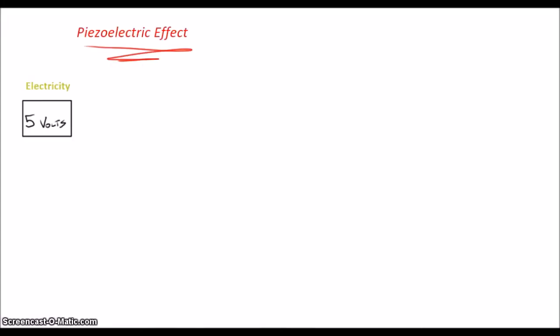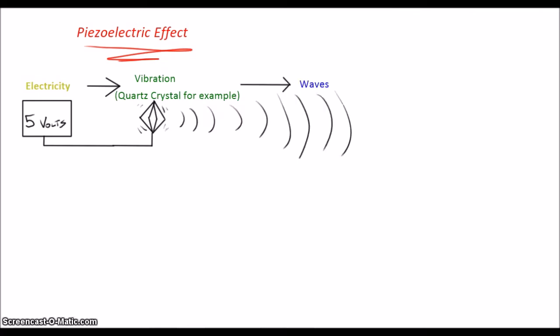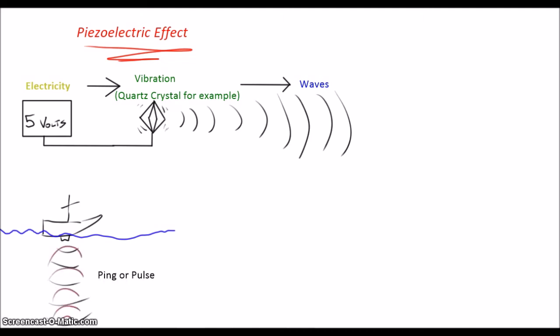We've talked about piezoelectrics and how electricity becomes vibration and creates waves. We've also talked about pings and pulses, and we've drawn images like this one. But when we talk about sonar, we usually use the term beam. So what is a sonar beam, and how is it different than these waves we've been drawing?